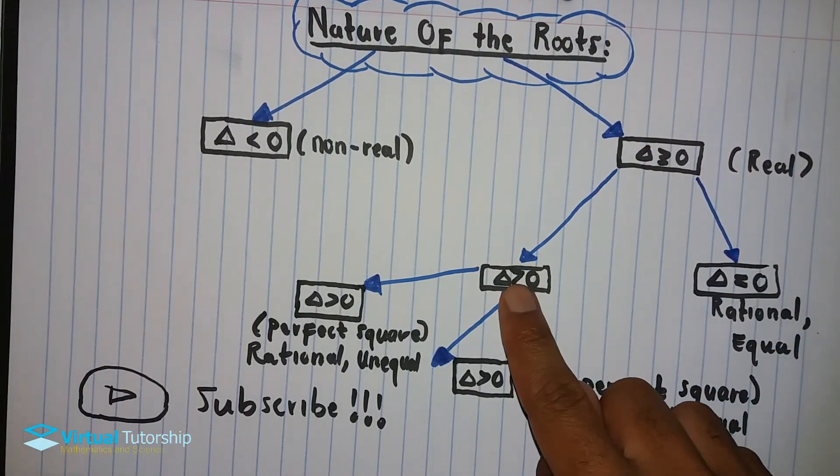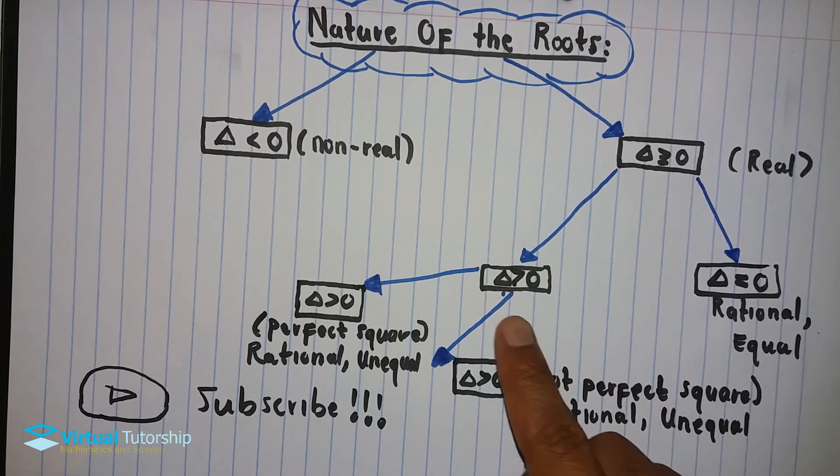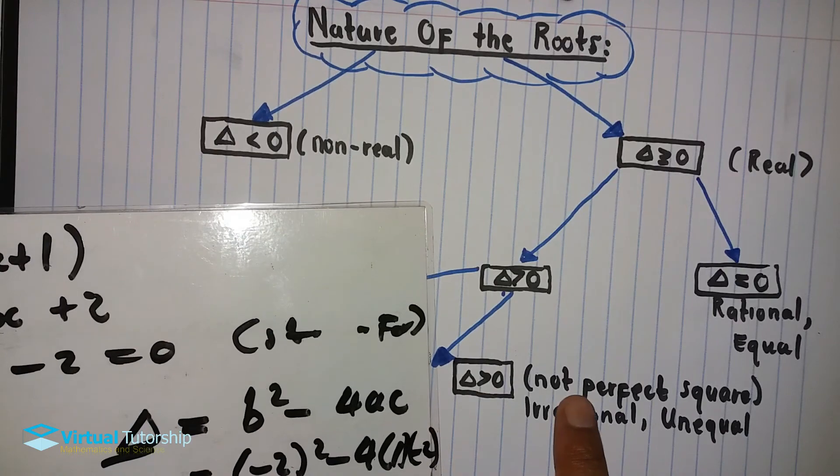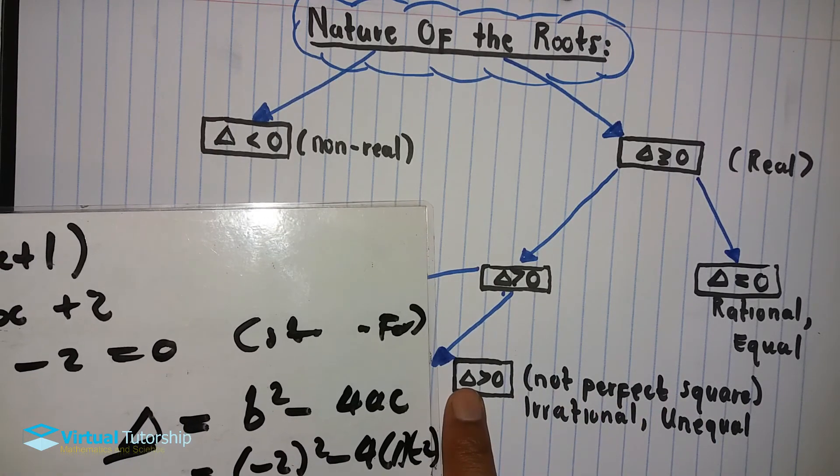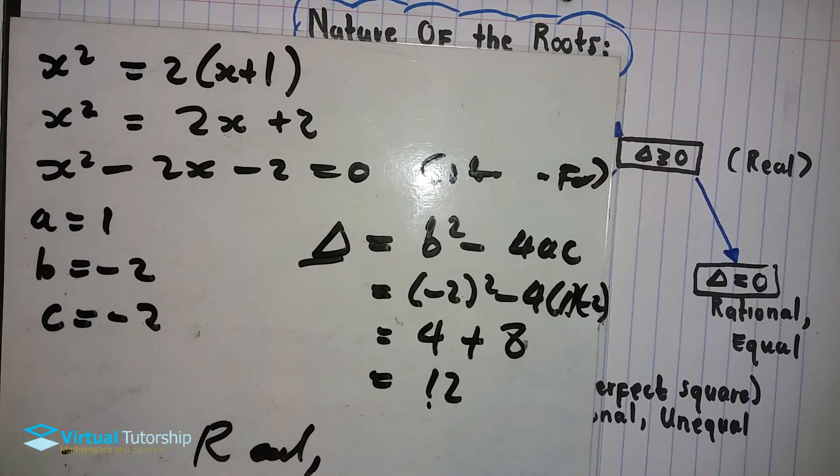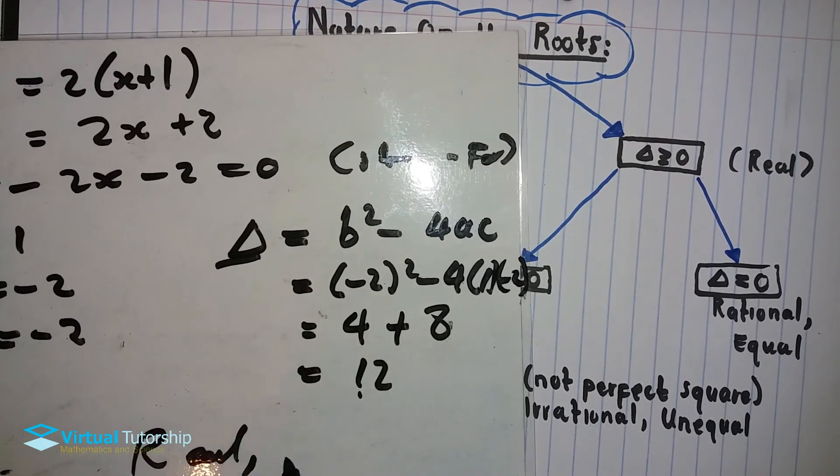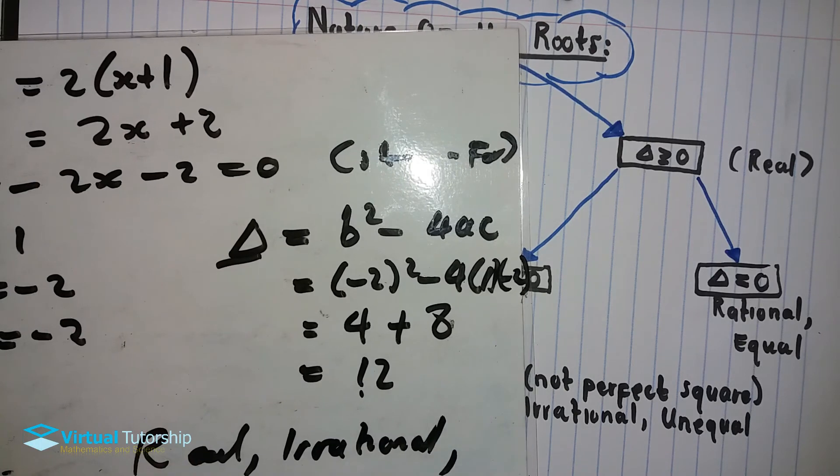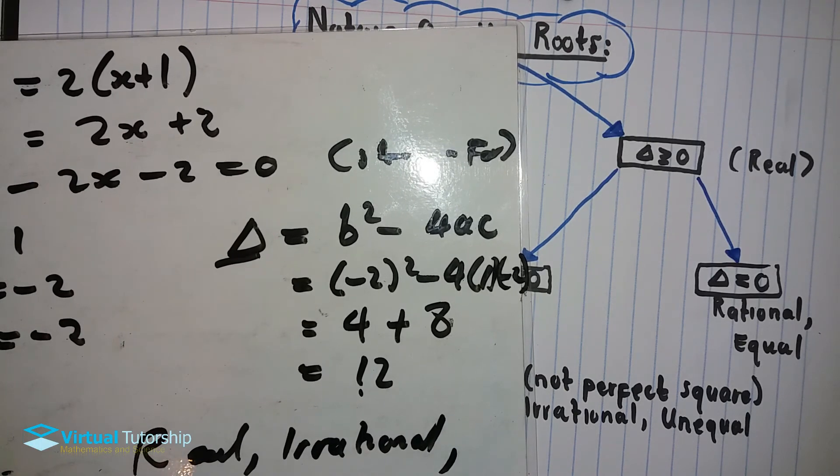The delta is not a perfect square, so the solutions are irrational and unequal. Irrational and unequal.